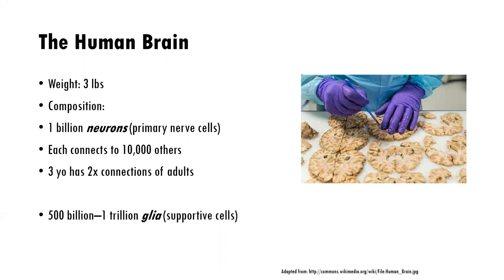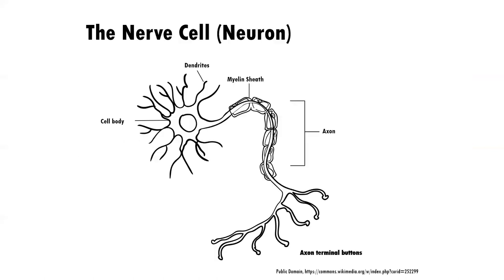In addition to those roughly one billion neurons, there are many, many more glia — or supportive cells — ranging from 500 billion to one trillion. So what are glia and what do they do? We'll discover that in just a second.